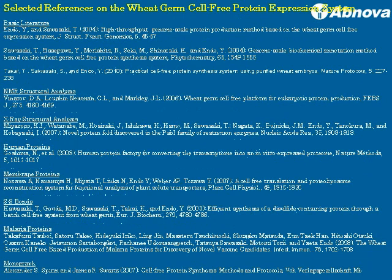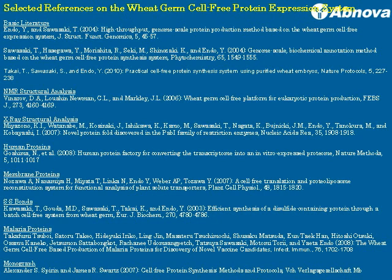This chart shows selected references on the wheat germ system: basic literature, NMR structure analysis, X-ray structure analysis, and human proteins — the 15,000 to 16,000 human gateway entry clones available. There are papers on membrane proteins, which I think will be a far more active area in coming years, and methods to cope with disulfide bonds. This is also the first formal paper about malaria proteins produced in the wheat germ system, and our system has been described in a monograph shown here.